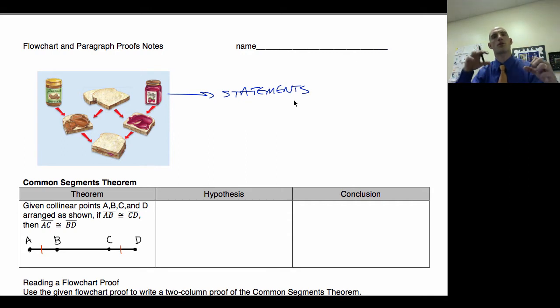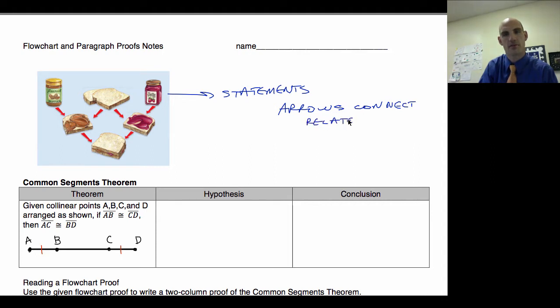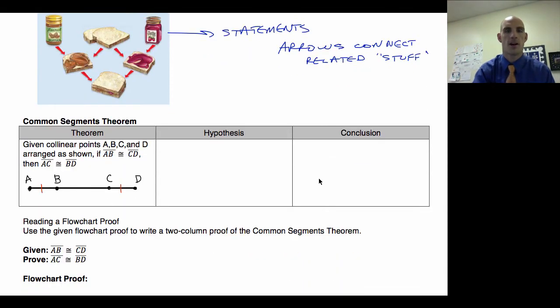As we move through this flowchart, we're going to notice that arrows connect the things that are related. I'm going to call it related stuff. Obviously, as we move down through this peanut butter and jelly diagram, we're going to see we get to the end and we've got the complete package. Well, that's what we're going to look at today when we talk about flowchart and paragraph proofs.